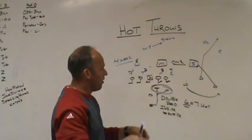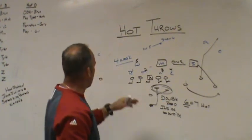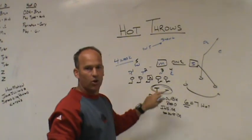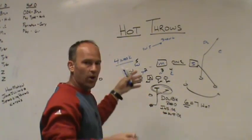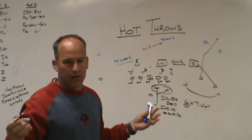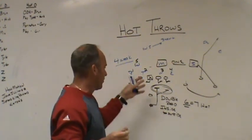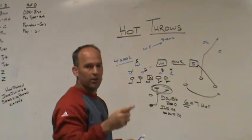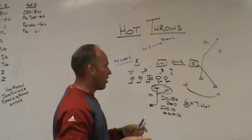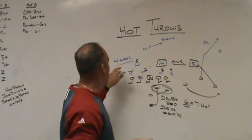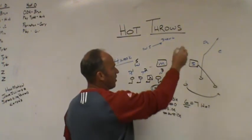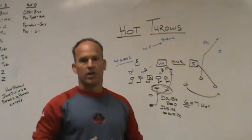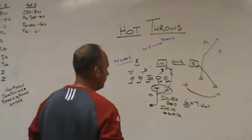If both linebackers come, that's seven — we can't account for seven. But if one comes and the backside guy is already accounted for, that's still only six possible rushers, and we can account for six if we leave the back in and double-read. Just build in different protection calls for your tailback — one tells him to go away, one to go to, one to free release — and tag it at the end of the call. He knows whether he's going play-side and free-releasing, play-side and double-reading, or going backside and accounting for four weak.